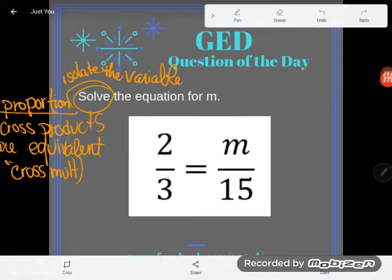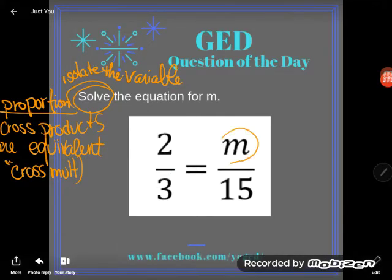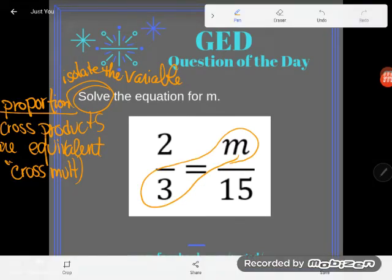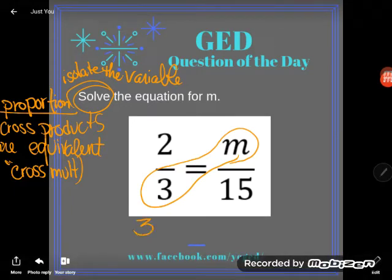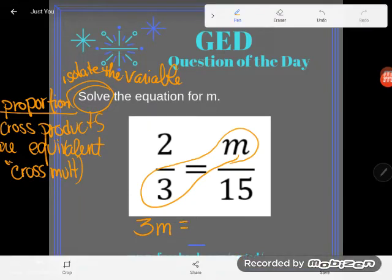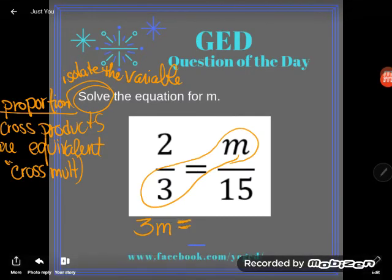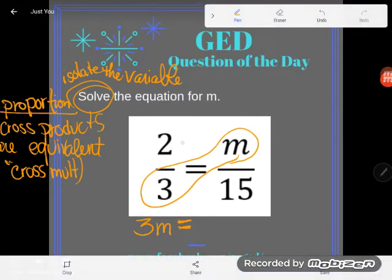Here we go. I'm going to start by cross multiplying. I will take the numerator of one of my fractions and multiply it by the denominator of the other in a crisscross pattern. It doesn't matter which one you start with, but I like to start with the one with the letter. So three times m is just 3m. That's a cross product. I said cross products are equivalent, meaning they're equal, so I'm going to put an equal sign here.